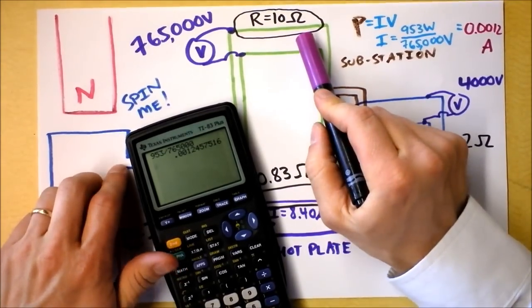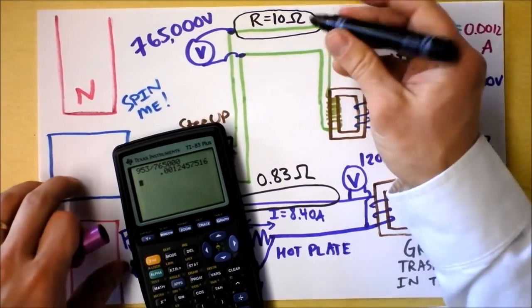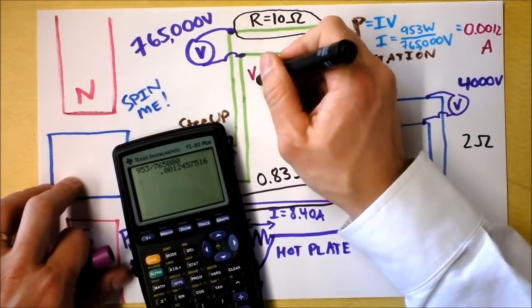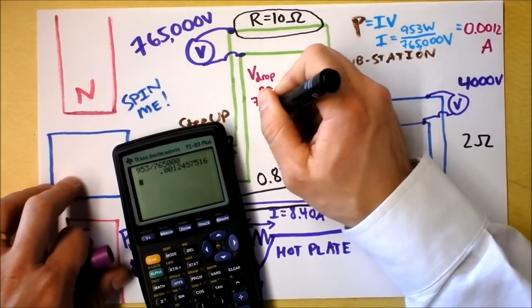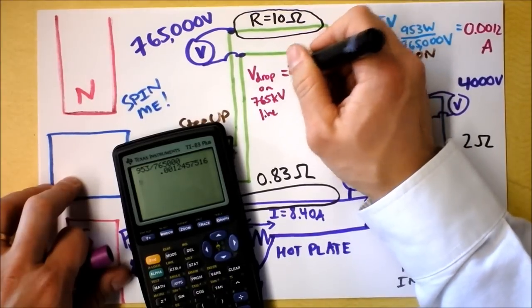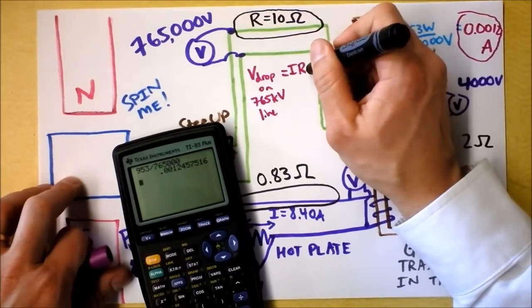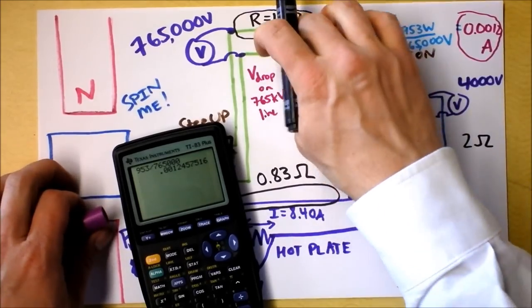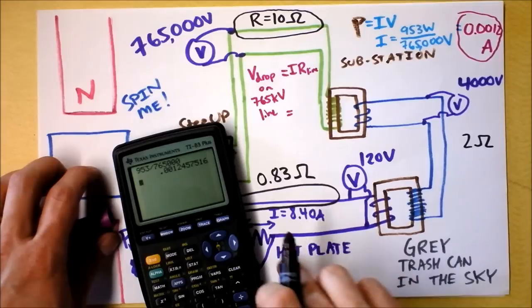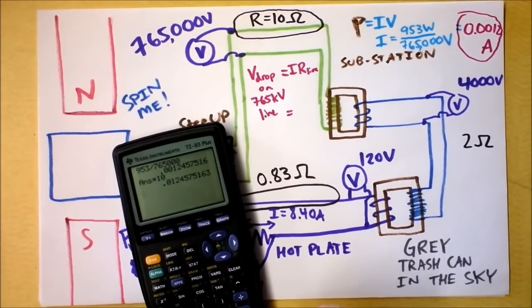But remember, we have a resistance of 10 ohms because it's a really long line. So I'm going to try to find the voltage drop. Voltage drop on the 765 kilovolt line equals current through the 765 kilovolt line times the resistance of the line. Be very careful to use the resistance of the line, which is this number, not the resistance of the load. I'm taking the current and I'm going to multiply it by the resistance of the line, which is 10 ohms.